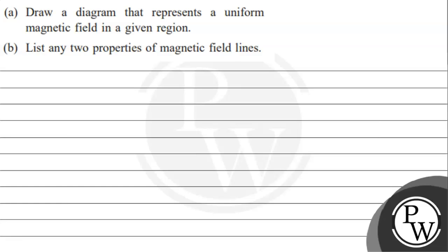Hello, let's read a given question. The question says part A, draw a diagram that represents a uniform magnetic field in a given region. Part B, we need to find at least any two properties of magnetic field lines.